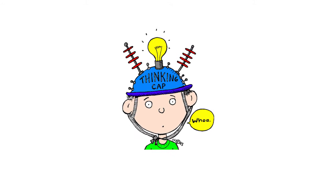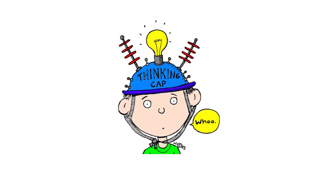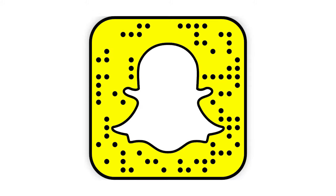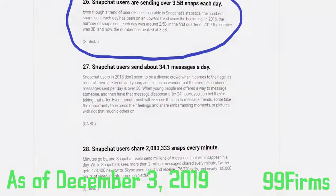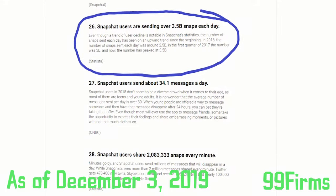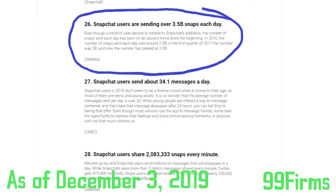To visually grasp the concept of rate of change, let's use the popular social media app Snapchat. According to 99 Firms, Snapchat users are sending on average 3.5 billion snaps each day, which is an astronomical figure.